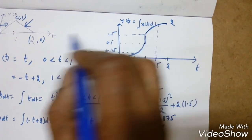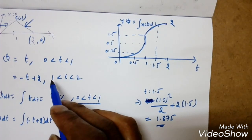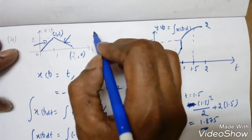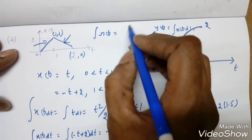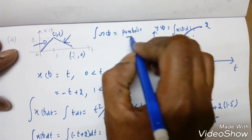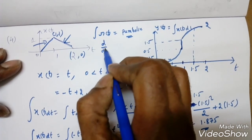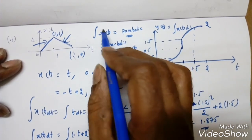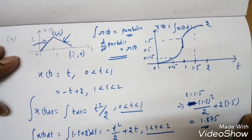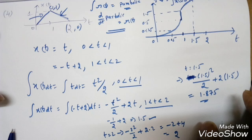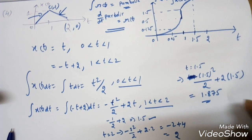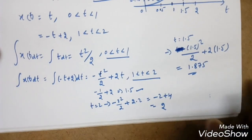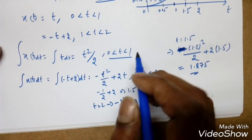So integrating the triangular (ramp-then-ramp) signal gives a parabolic curve. To remember: integrating a ramp gives a parabolic signal, and differentiating a parabolic signal gives a ramp. That completes the integration and differentiation of signals. If you have any doubts, please post a comment below.